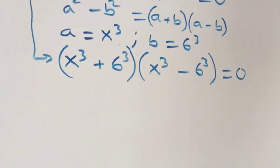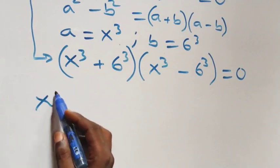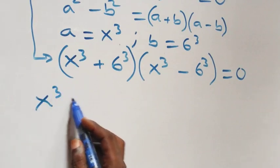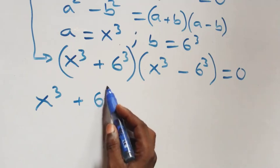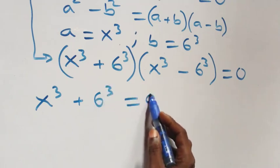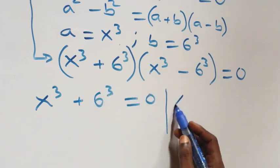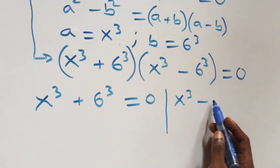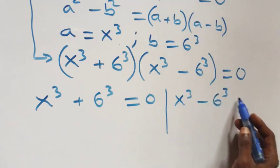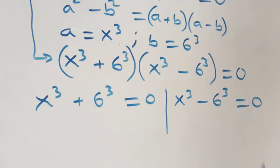This implies we have two possible cases. The first case is x raised to power 3 plus 6 raised to power 3 equals 0, and the second is x raised to power 3 minus 6 raised to power 3 equals 0.